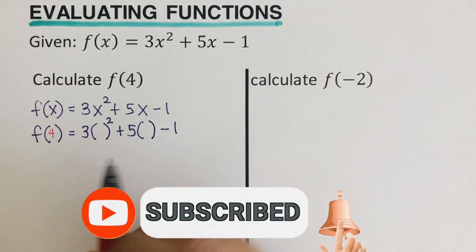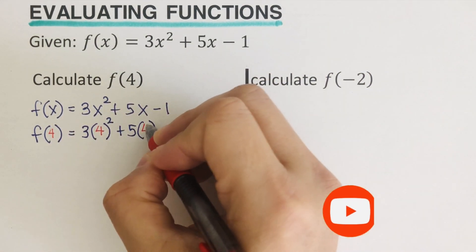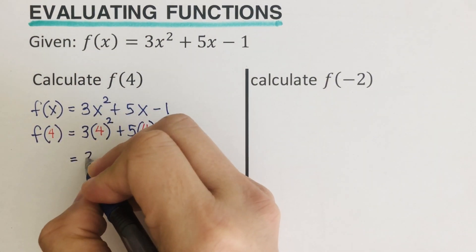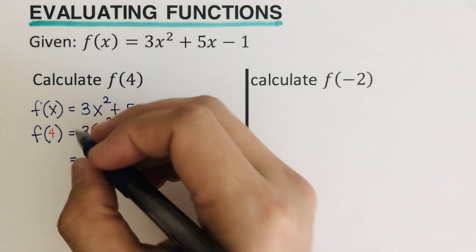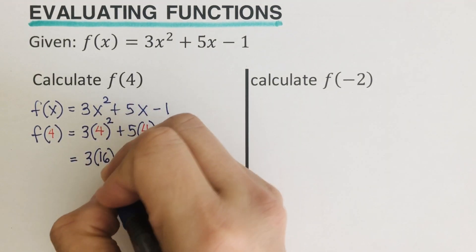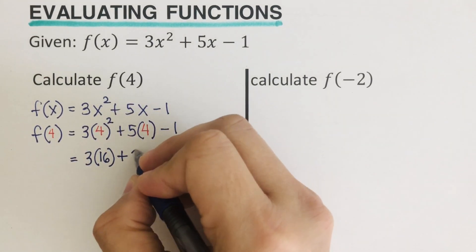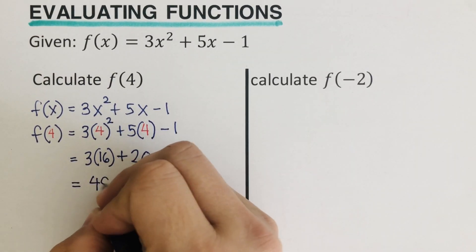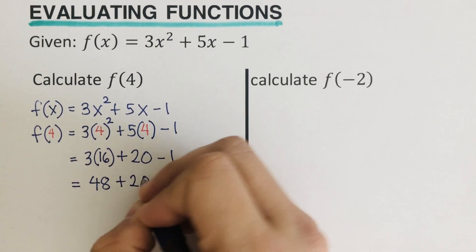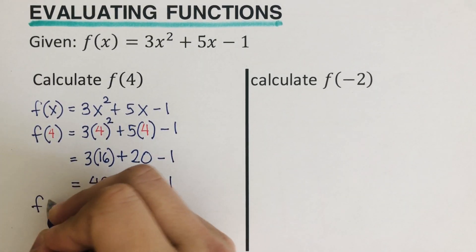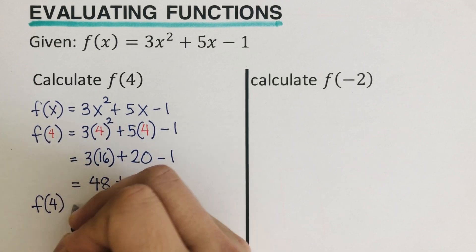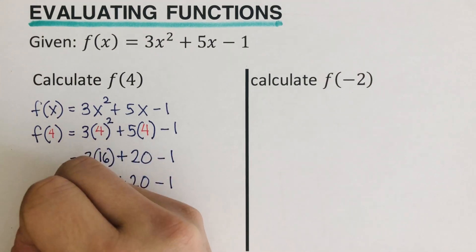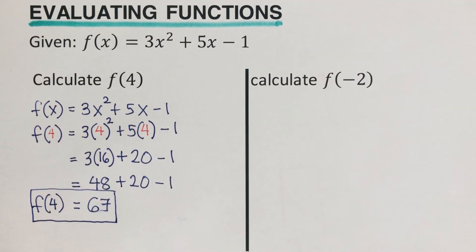Since x is 4, I'll put 4 in all of the parentheses. So we have 3 times (4)², which is 3 times 16 = 48, plus 5 times 4 = 20, then minus 1. So 48 + 20 − 1 means that f(4) = 67.